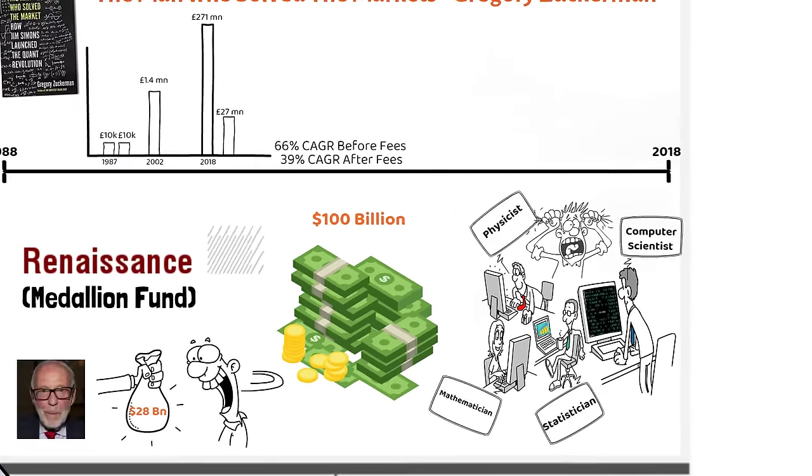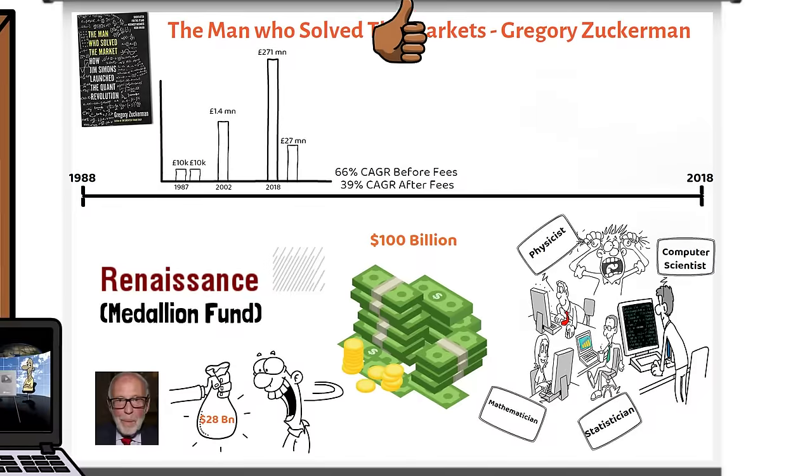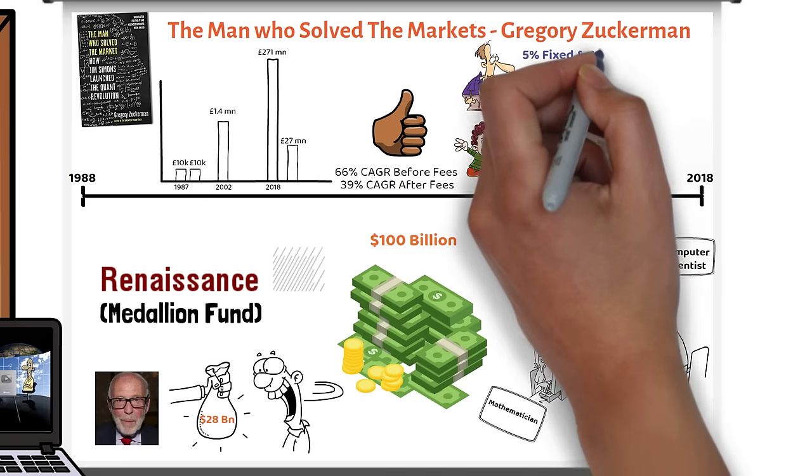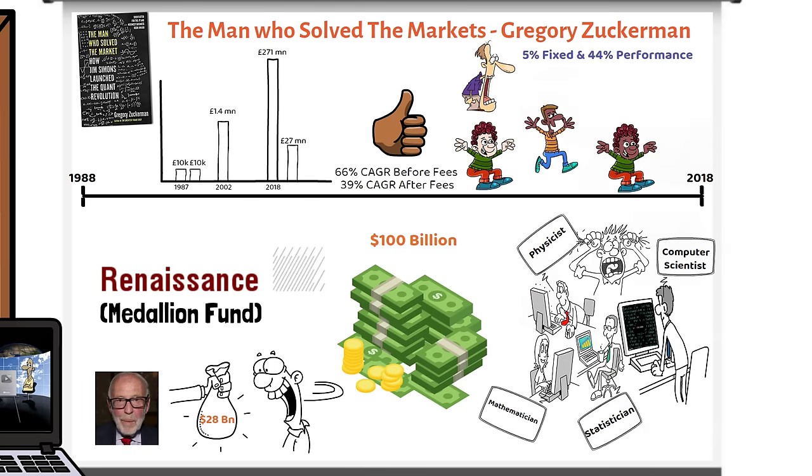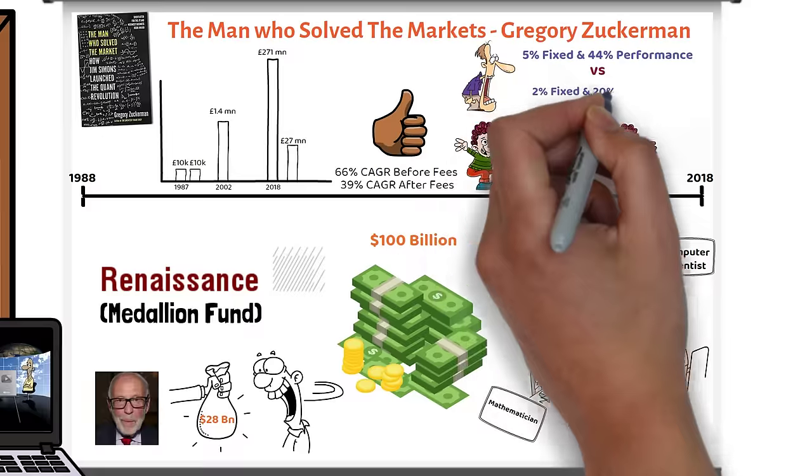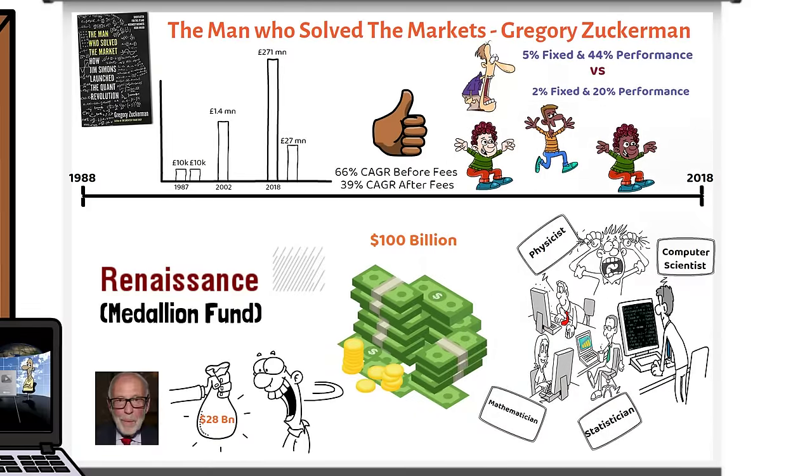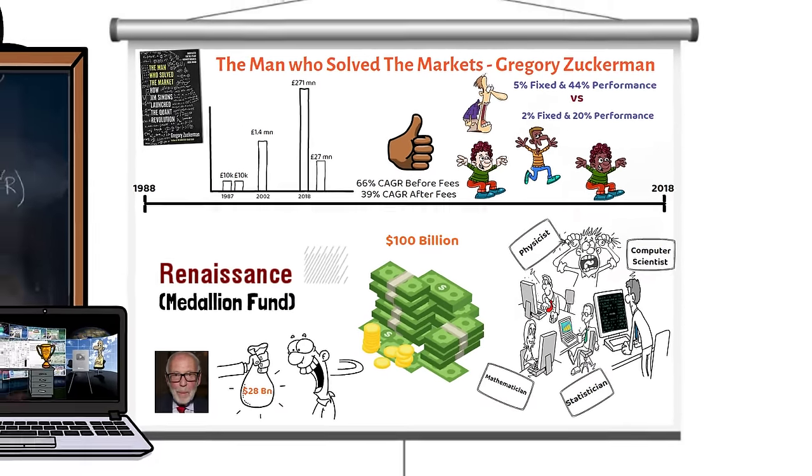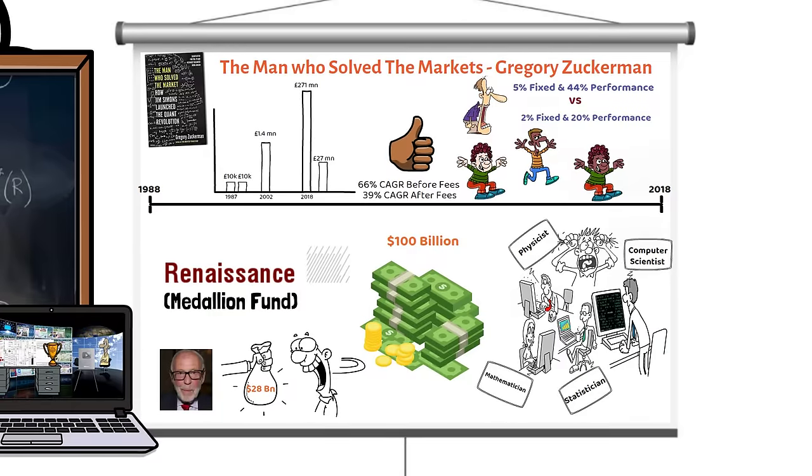The returns at the medallion fund were so good that investors queued up even when medallion charged a jaw-dropping 5% fixed and 44% performance fee to the investors in the fund, which is sharply higher than the typical 2% fixed and 20% performance fee structure prevalent in the hedge fund industry. So what made medallion so special, and how did Jim Simons make so much money from maths? Let's find out.